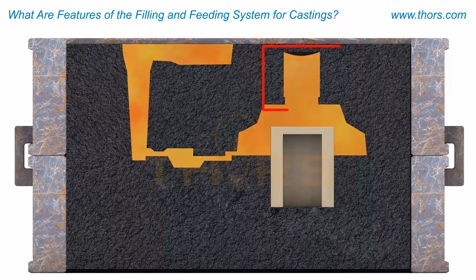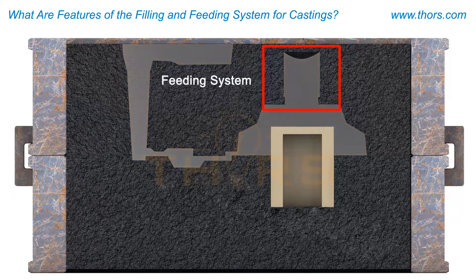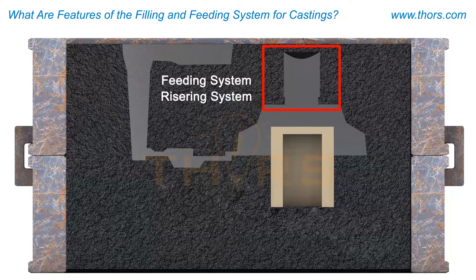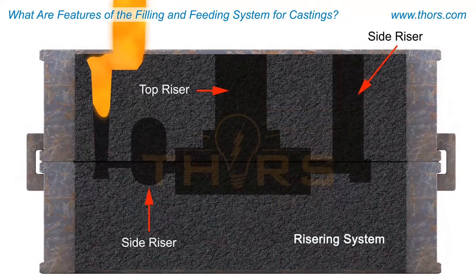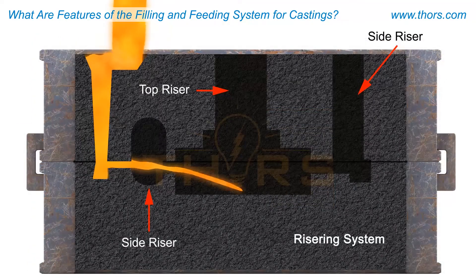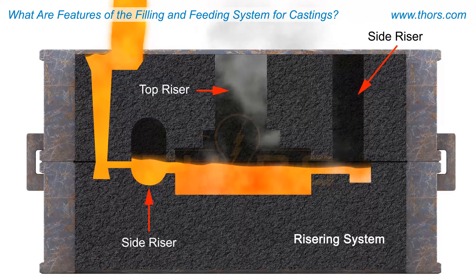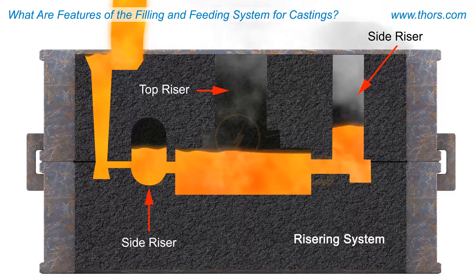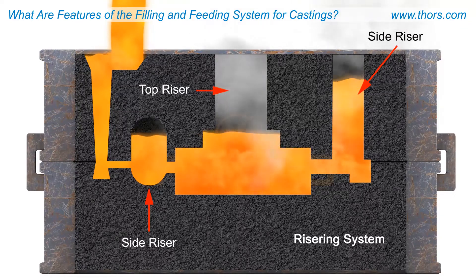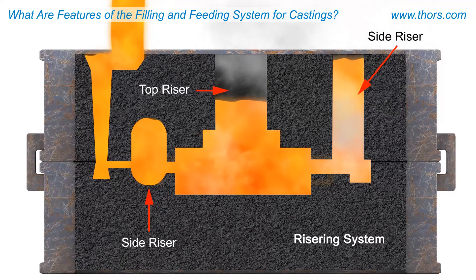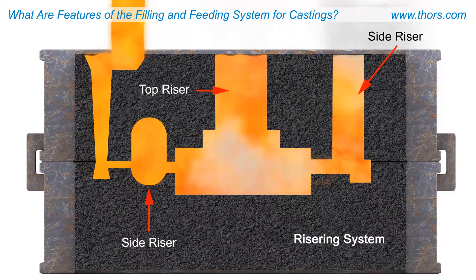To prevent shrinkage porosity, a feeding system is devised. This feeding system is also known as the risering system. The feeding system ensures there is a continuous supply of molten metal to the casting during solidification, to compensate for shrinkage.